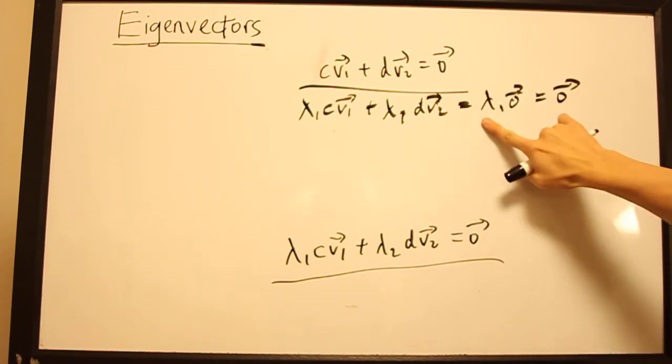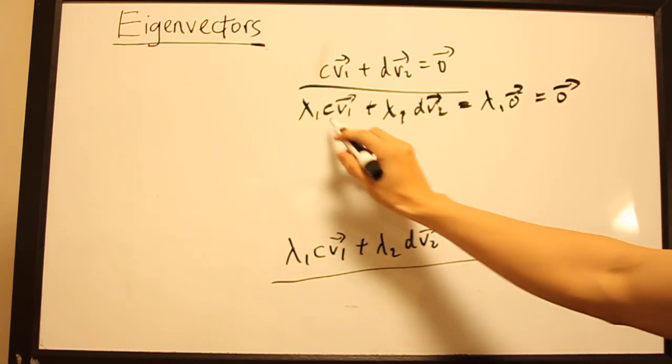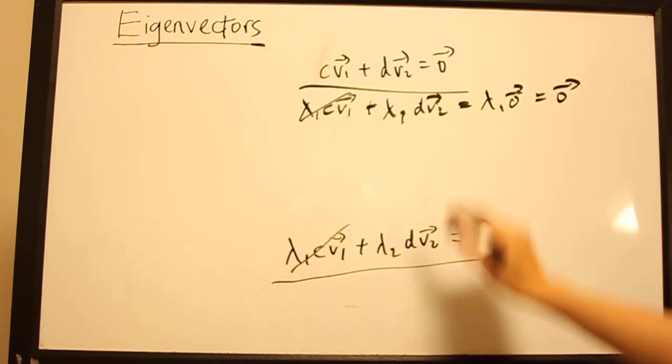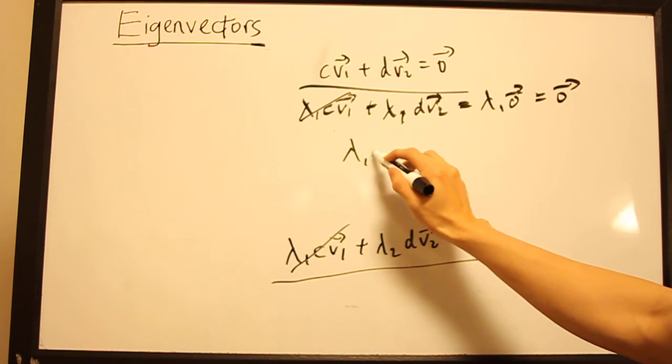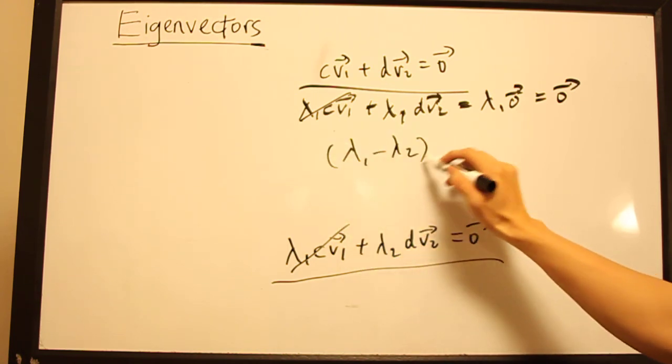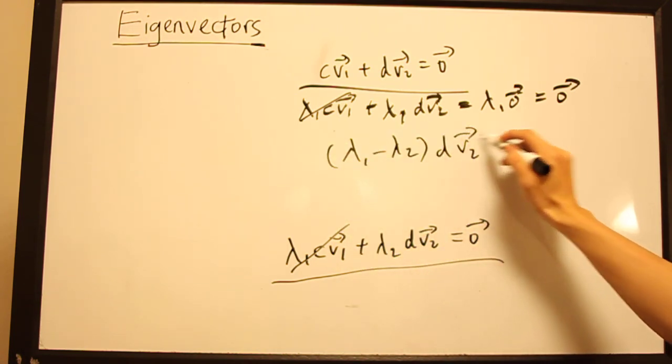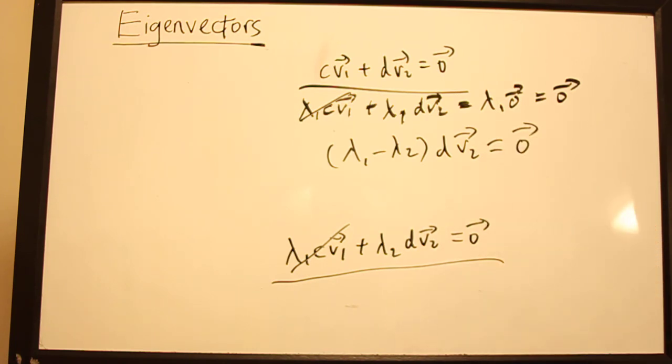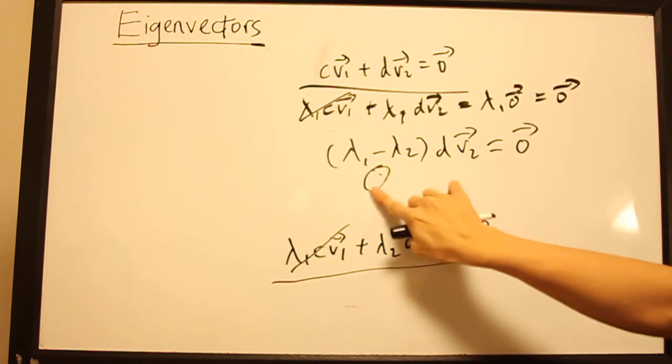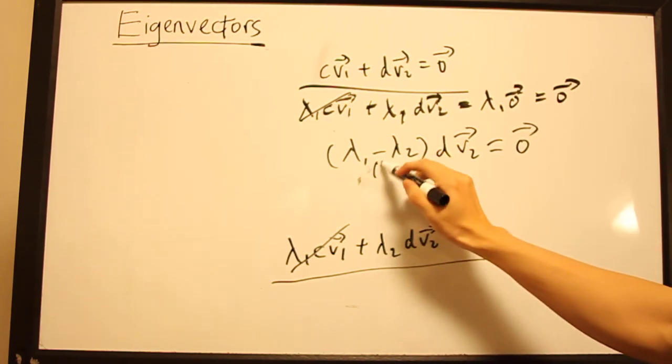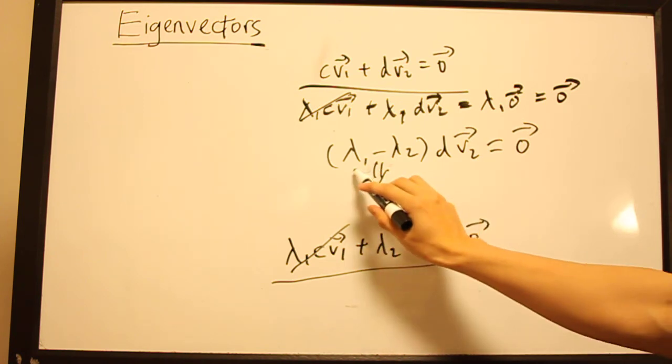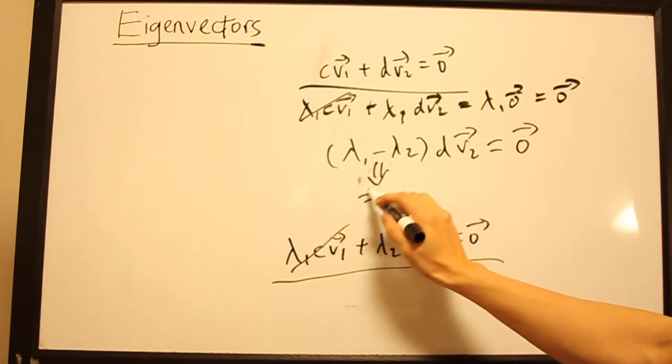Now, if we take this minus this, what do we get? So this term cancels out. And this term becomes (λ₁ - λ₂)·D·V₂ equals 0. So this term is not 0 because λ₁ is not equal to λ₂. So this is not equal to 0.